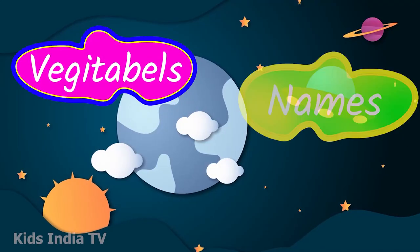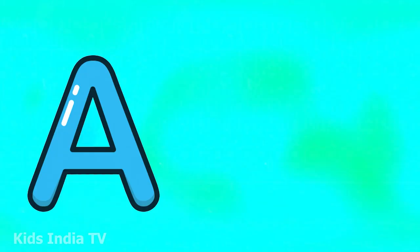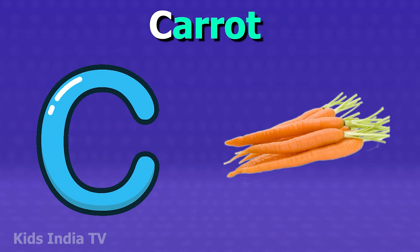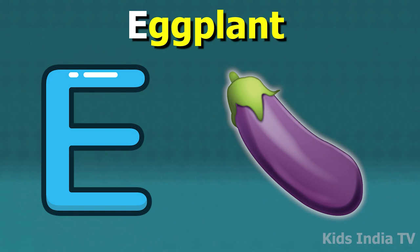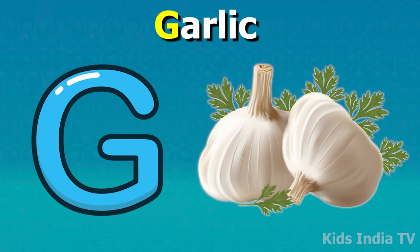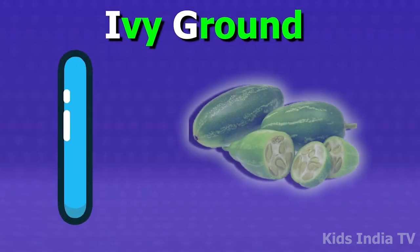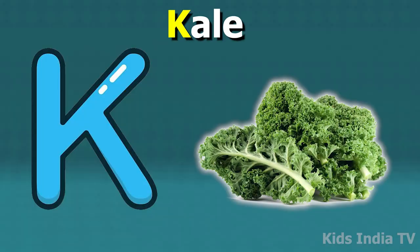Vegetable names according to alphabets: A for ash gourd, B for broccoli, C for carrot, D for drumstick, E for eggplant, F for fenugreek, G for garlic, H for heart of palm, I for ivy gourd, J for jackfruit, K for kale.